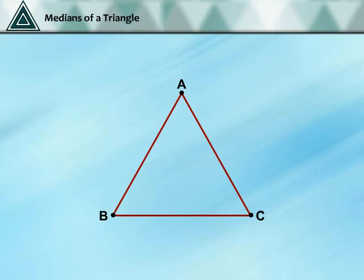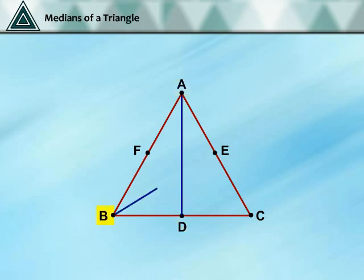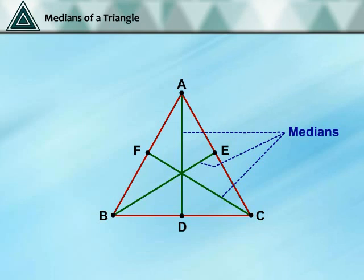Median of a Triangle: for a given triangle ABC, find the midpoint of side AB, BC and CA. Mark the midpoints as F, D and E respectively. Join vertex A to the midpoint of its opposite side at point D, vertex B to the midpoint of its opposite side at point E, and vertex C to the midpoint of its opposite side at F. Line segments AD, BE and CF join the vertices of the triangle to the midpoints of the opposite sides — they are called the medians of the triangle.